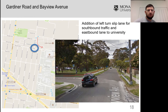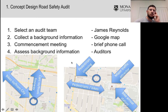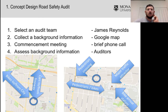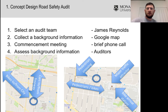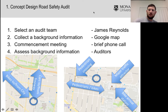So let's take an example. We're going to do a fake road safety audit, and this first one is going to be at the concept design stage. Basically all we have is a concept design — the plan is to put in a left turn slip lane from Gardiner Road into Bayview Avenue. Step one: select an audit team.